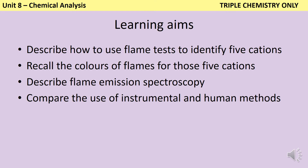By the end of this video you should be able to describe how to complete a flame test to identify five different cations, including what the colours of the flames are for those cations. You should also be able to describe flame emission spectroscopy and how we could read a spectrum, and compare the use of instrumental and human methods.